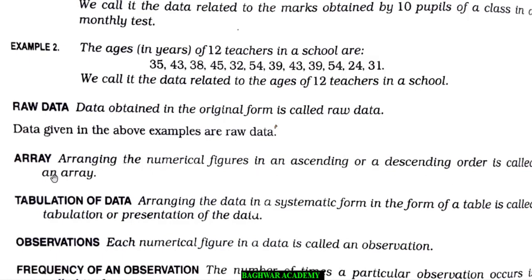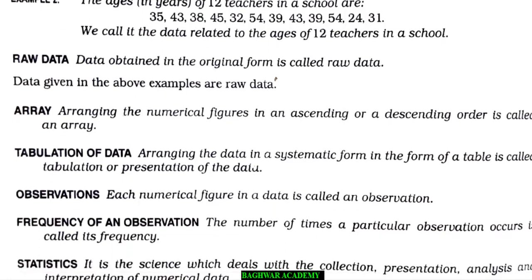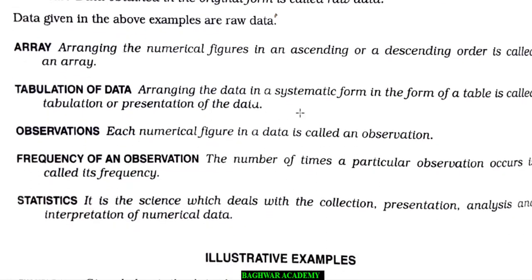Then you have array — arranging the numerical figures, or arranging the data, in ascending or descending order is called an array. Suppose the same data you have got, the ages of 12 teachers — if you are arranging that in either ascending or descending order, then that will be called array. Then you have tabulation of data — arranging the data in a systematic form in the form of a table is called tabulation or presentation of the data. Suppose the same data you are presenting in the form of a table — that will be called tabulation of data.